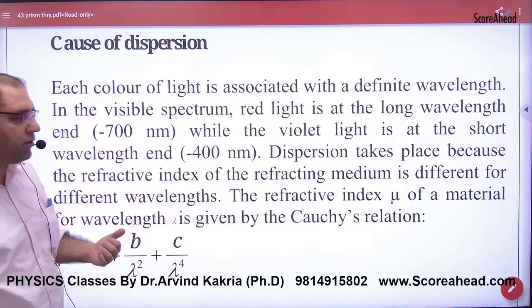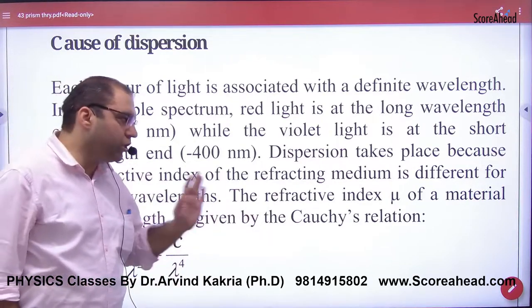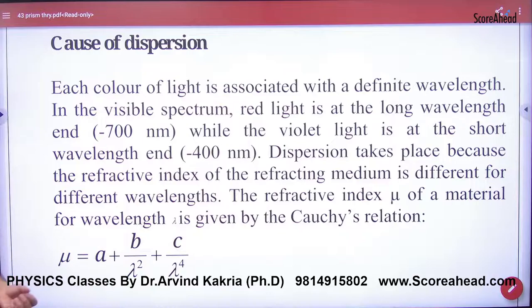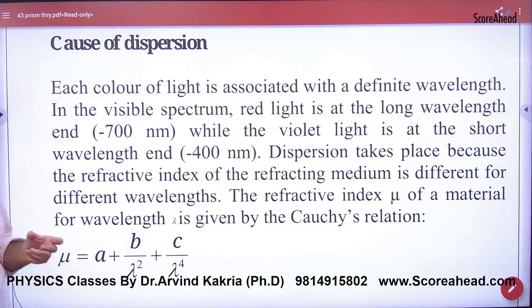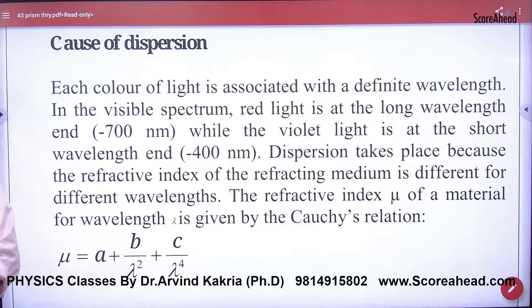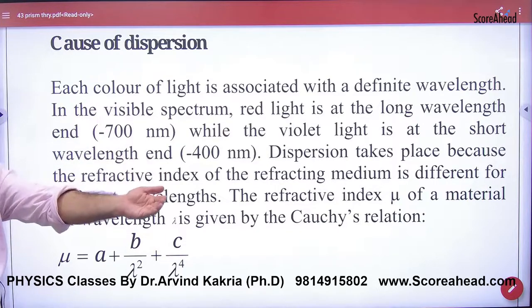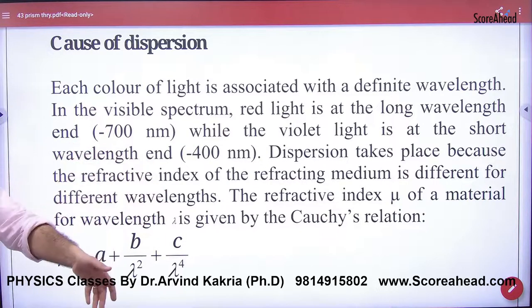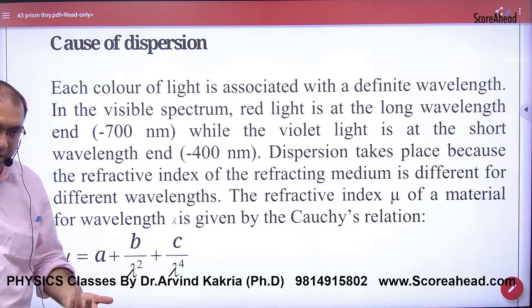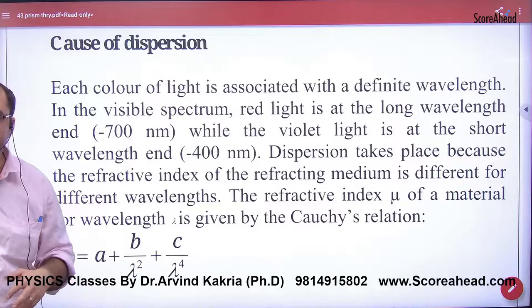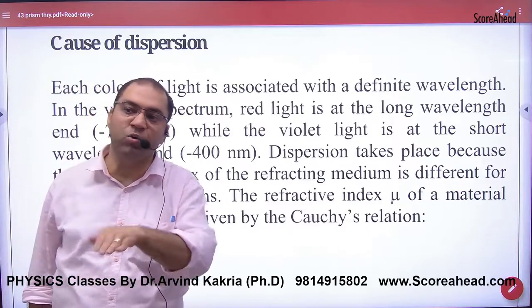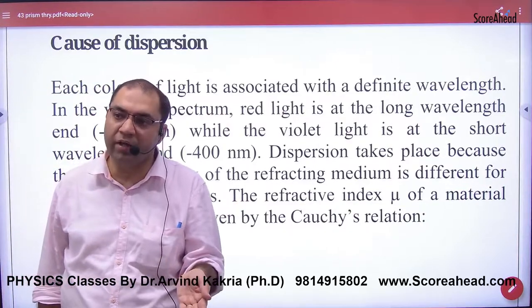Now a scientist, Cauchy, has a relation: the refractive index of glass is equal to this — that means inversely proportional to lambda. So whichever lambda of the color will be greater, the refractive index will be reduced. Now what is the refractive index of less or less? There is a difference between speed.